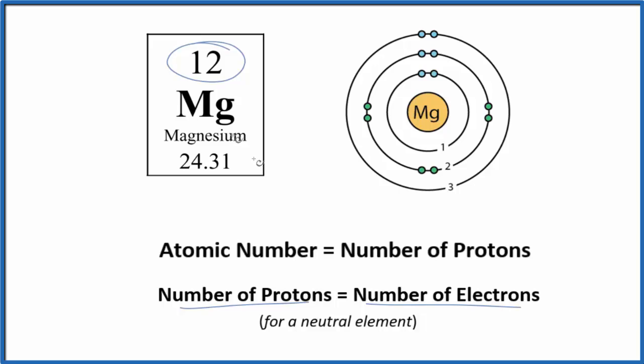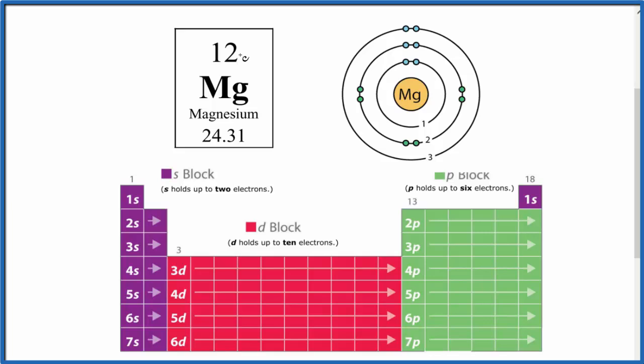Those electrons will be in energy levels around the nucleus, and we can look at the periodic table to help figure out how we're going to divide them up into these energy levels. Remember, we have 12 total electrons.